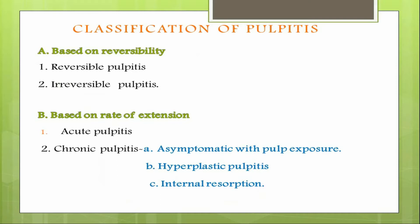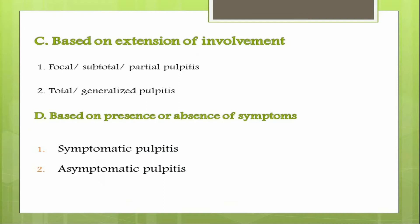Chronic pulpitis is of three types: symptomatic with pulpal exposure, chronic hyperplastic pulpitis, and internal resorption. Based on extension of involvement, it can be classified into focal or partial pulpitis where only a portion of the pulp is involved, and total or generalized pulpitis where the entire pulp is involved, though this classification does not have much clinical significance.